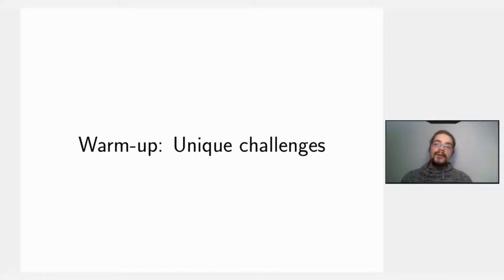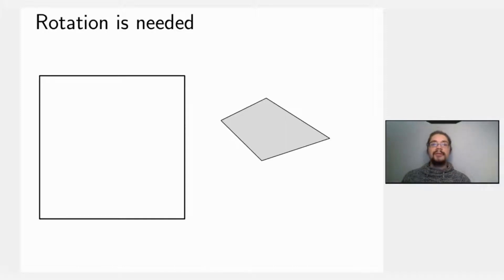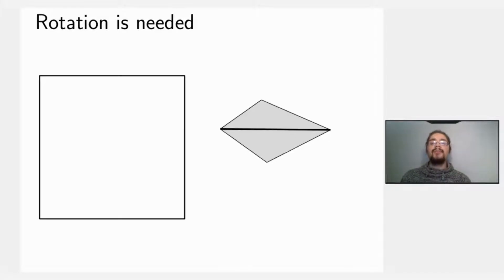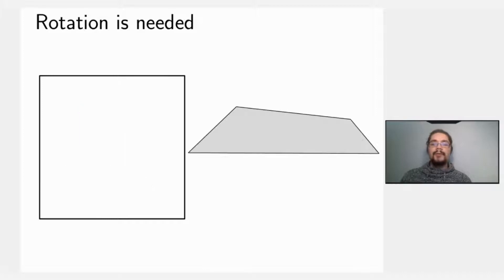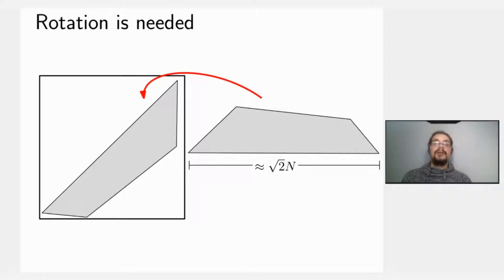Let's look at the unique challenges this problem poses. First, rotation is really needed. An initial strategy might be to rotate polygons along their diameter and stack them in a shelf-packing manner. But this is debunked by polygons with very long diameters — the diameter is essentially the diagonal length — meaning we can only pack them along the diagonal, so we must do heavy rotation, namely rotating by 45 degrees.